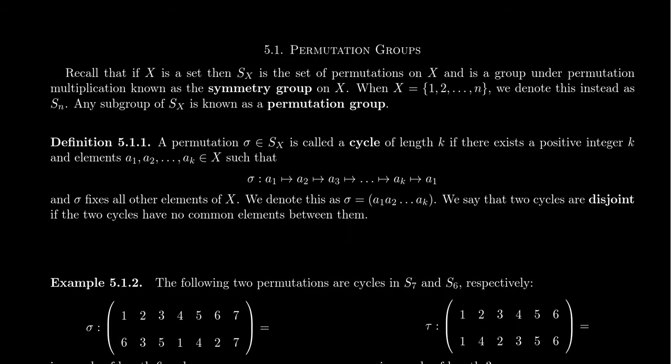And so you can see definition 5.1.1 right here. A permutation sigma inside of our symmetric group S sub X is called a cycle of length K if there exists some positive integer K and elements a_1, a_2 up to a_K inside of the set X such that sigma looks like the following: a_1 maps to a_2, a_2 maps to a_3, a_3 maps to a_4, a_4 maps to a_5, all the way down to a_{K-1} maps to a_K, and then a_K maps back to a_1.